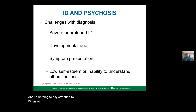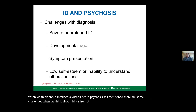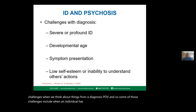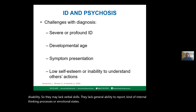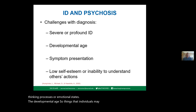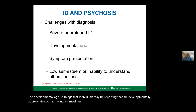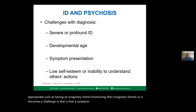When we think about intellectual disabilities and psychosis, there are challenges from a diagnosis point of view. When an individual is dealing with a severe or profound intellectual disability, they may lack verbal skills and the general ability to report internal thinking processes or emotional states. The developmental age is also a factor — for example, reporting an imaginary friend could be developmentally appropriate, or it could be a hallucination.